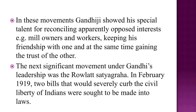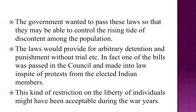The next significant movement under Gandhi's leadership was the Rowlatt Satyagraha. In February 1919, two bills that would severely curb the civil liberty of Indians were sought to be made into laws. The government wanted to pass these laws to control the rising tide of discontent among the population. The laws would provide for arbitrary detention and punishment without trial. In fact, one of the bills was passed in the council and made into law in spite of protests from the elected Indian members.